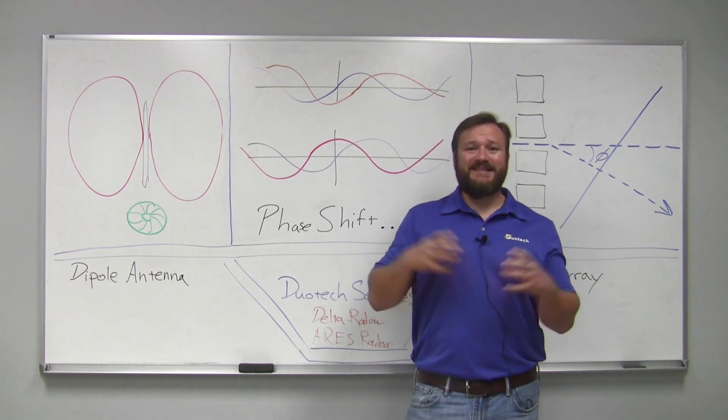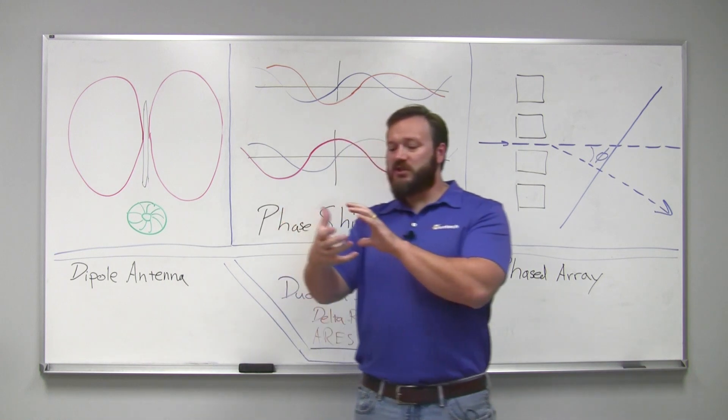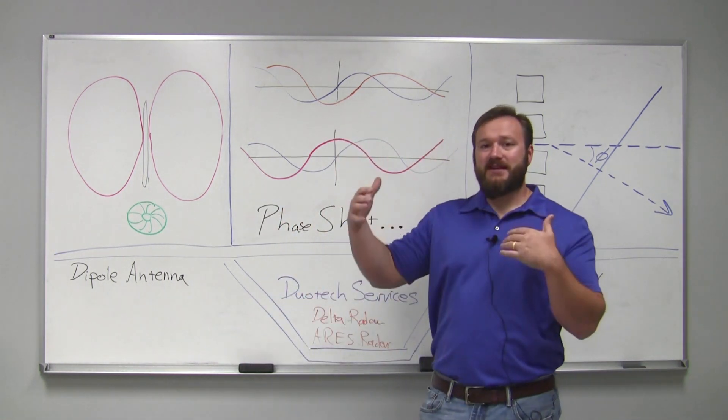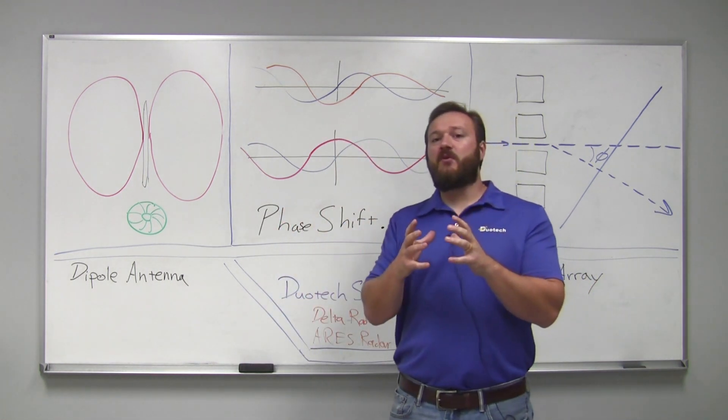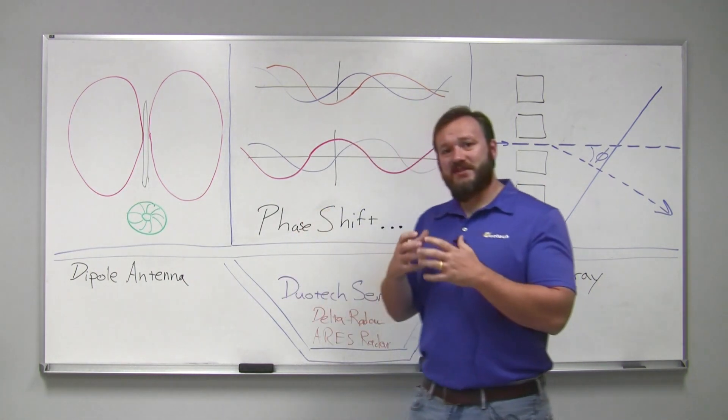When we talk about the size of antennas, the higher the frequency, the smaller the antenna. The relationship between how long an antenna is, how close elements are together in arrays, has to do with the frequency that those propagations, those signals, go out at.